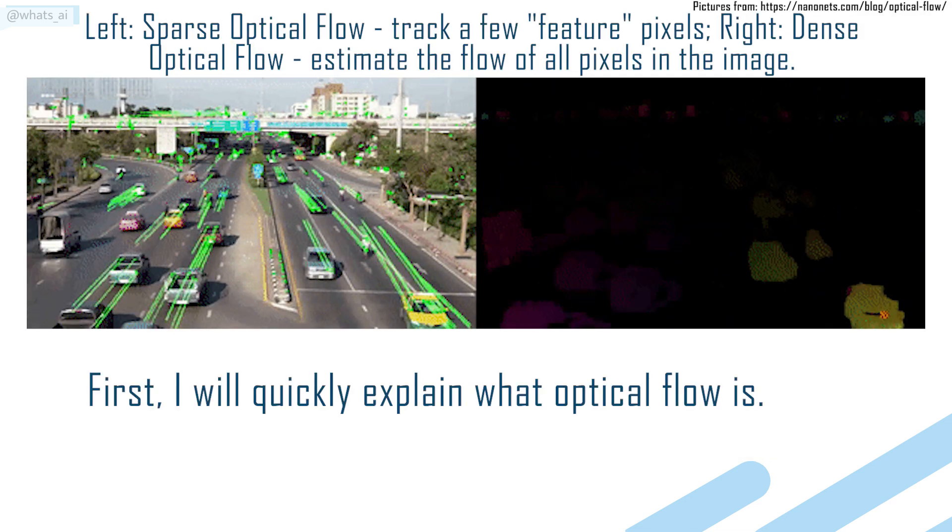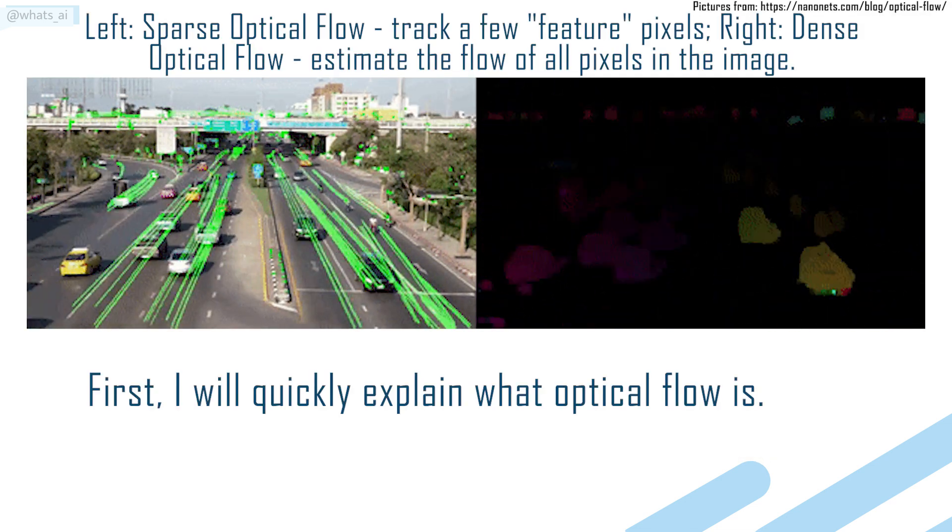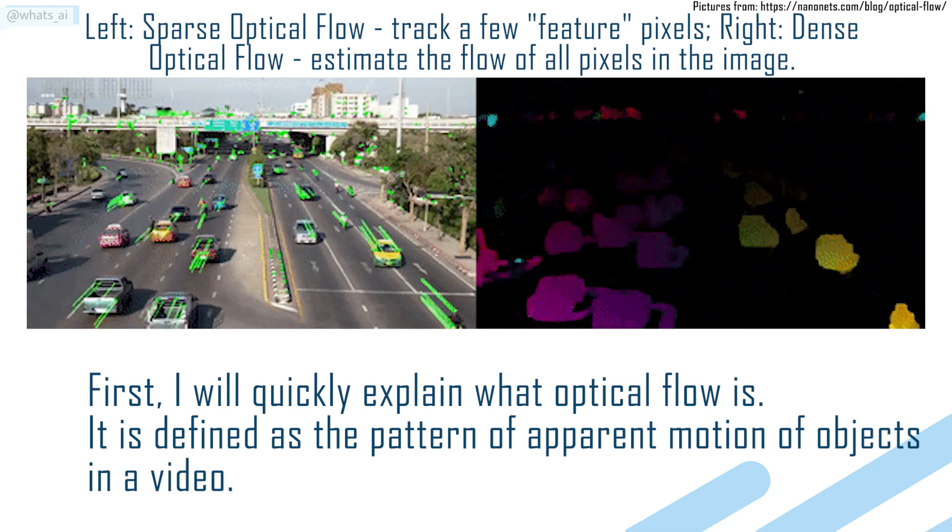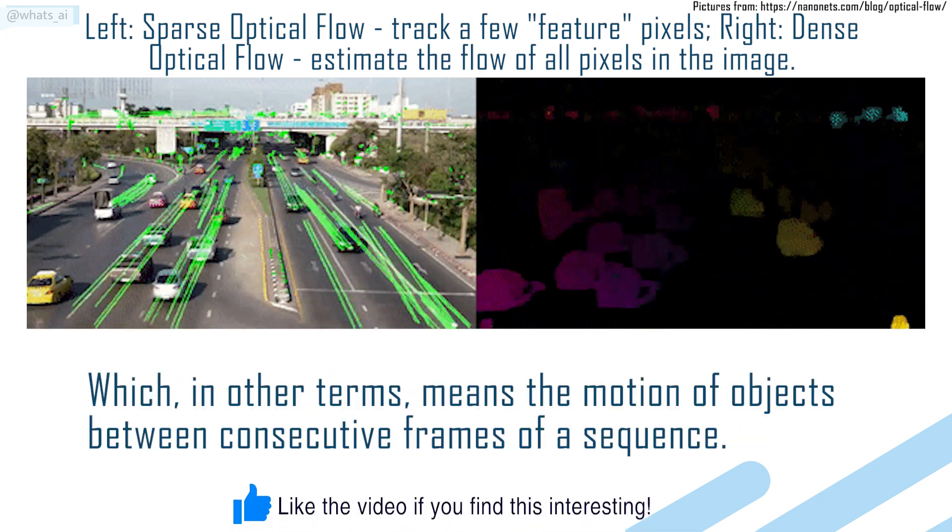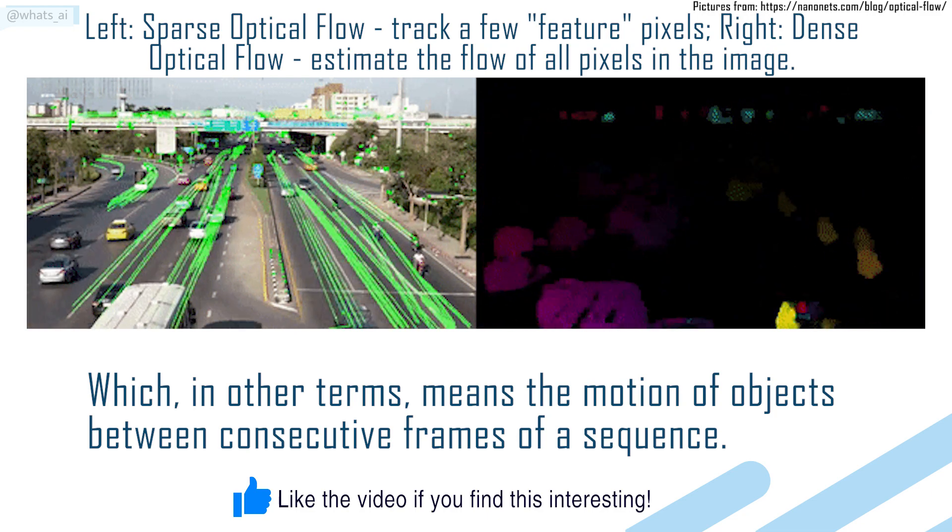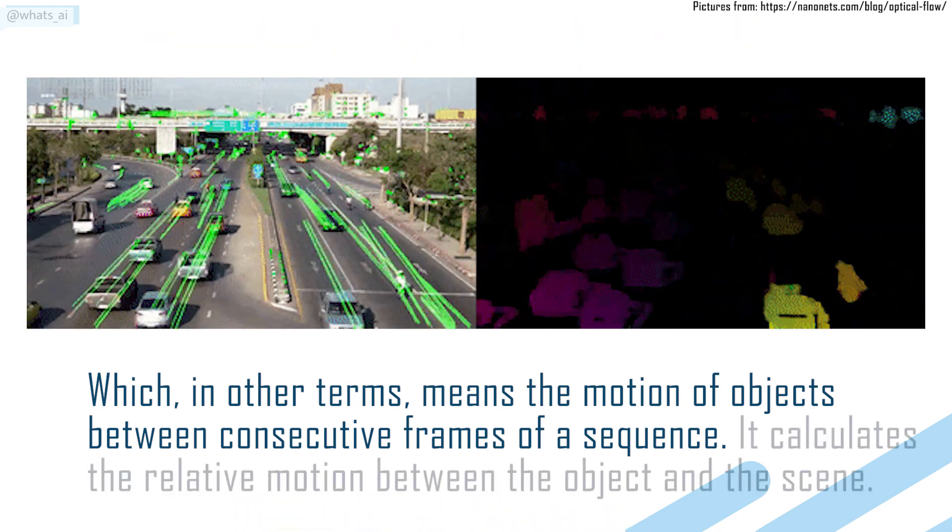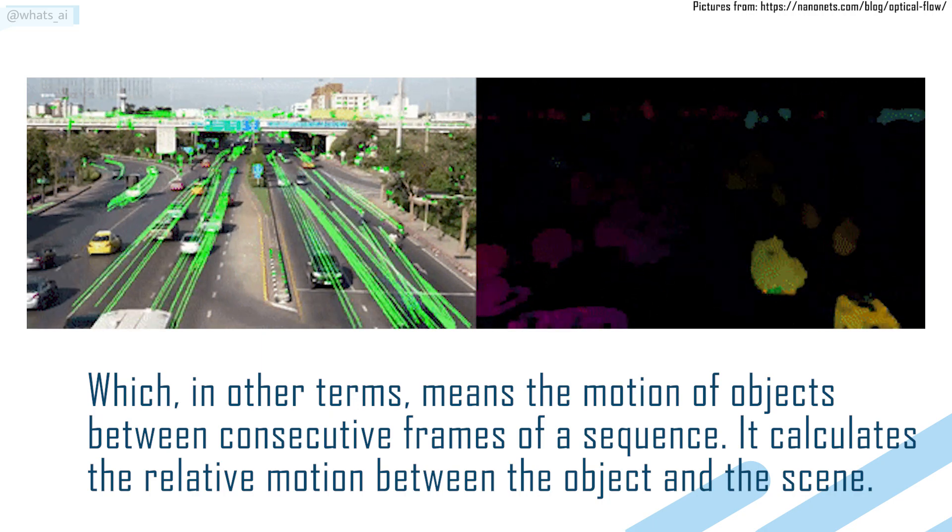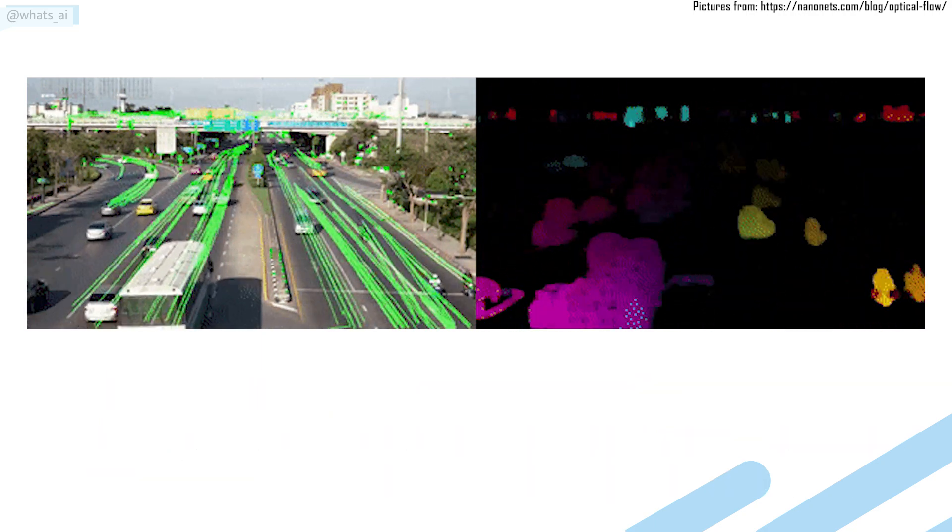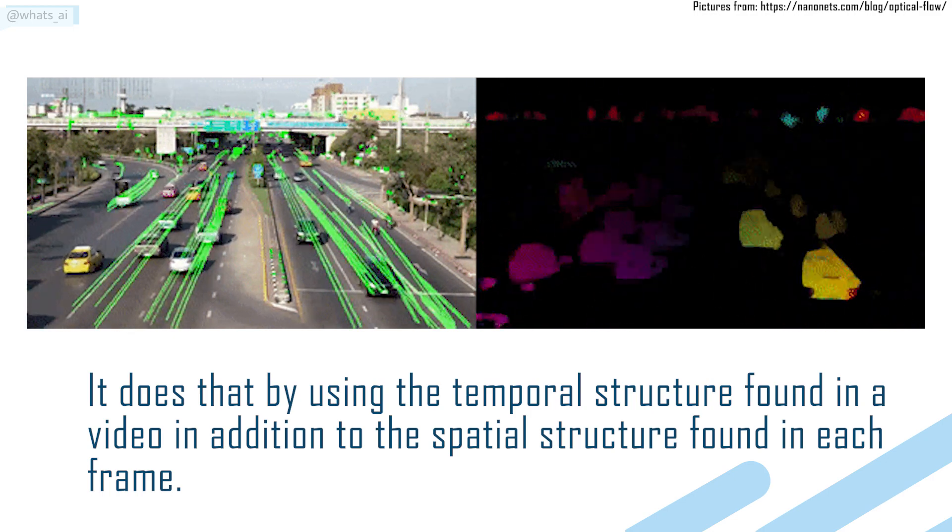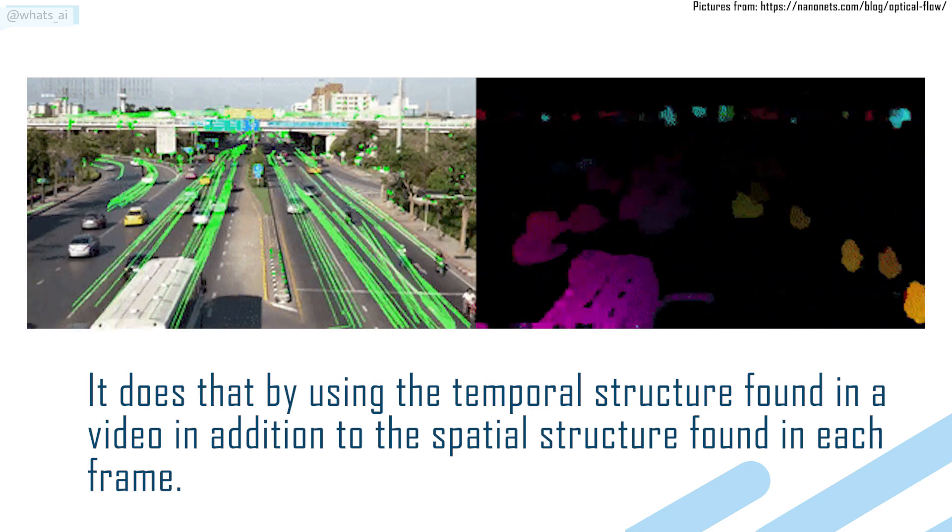First, I will quickly explain what optical flow is. It is defined as the pattern of apparent motion of objects in a video, which, in other terms, means the motion of objects between consecutive frames of a sequence. It calculates the relative motion between the object and the scene. It does that by using the temporal structure found in the video in addition to the spatial structure found in each frame.